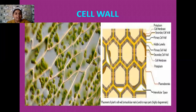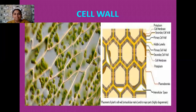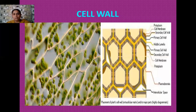Next to the cell wall a layer is present known as the middle lamella. This middle lamella consists of a calcium compound known as calcium pectate. The function of the middle lamella is it behaves as an adhesive — it joins two adjacent cells together by acting as a glue. Next to the middle lamella, the plasma membrane is present.